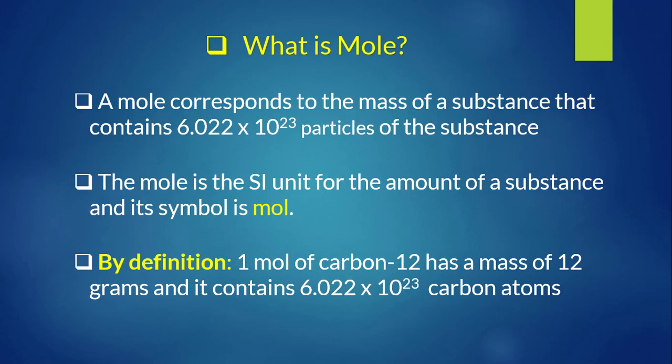A mole corresponds to the mass of a substance that contains 6.022 × 10²³ particles of the substance. That number is Avogadro's number. The mole is an SI unit for the amount of a substance, and its symbol is 'mol'. By definition, one mole of carbon-12 has a mass of 12 grams and contains 6.022 × 10²³ carbon atoms.